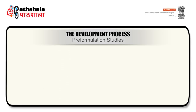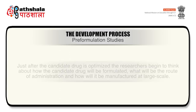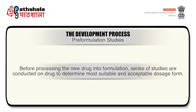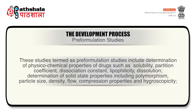The first step in the drug development process is pre-formulation study. Just after the candidate drug is optimized, researchers begin to think about how the candidate drug will be formulated, what will be the route of administration, and how it will be manufactured at large scale. Before processing the new drug into a formulation, a series of studies are conducted to determine a more suitable and acceptable dosage form. These pre-formulation studies include determination of physicochemical properties such as solubility, partition coefficient, dissociation constant, lipophilicity and dissolution.